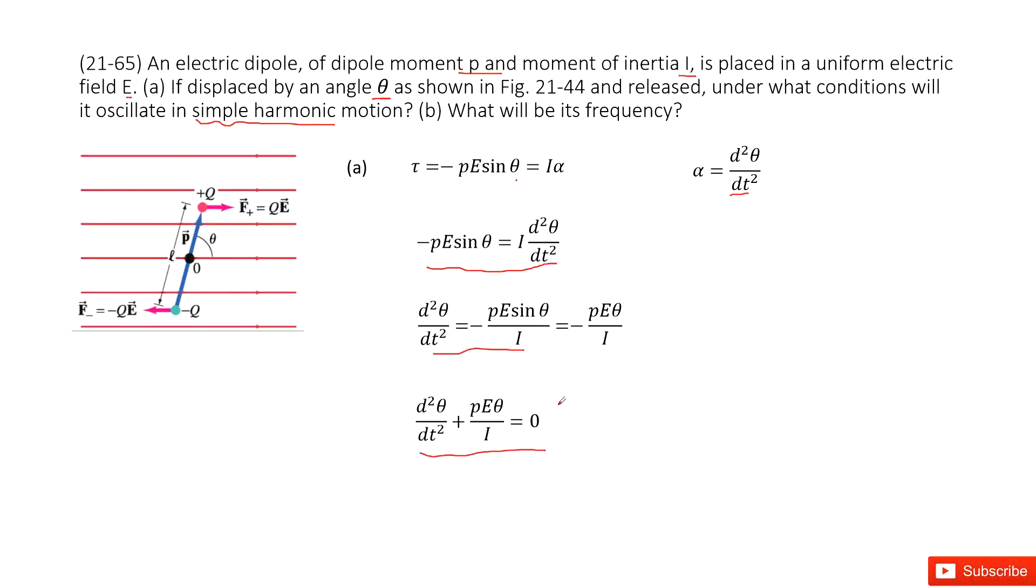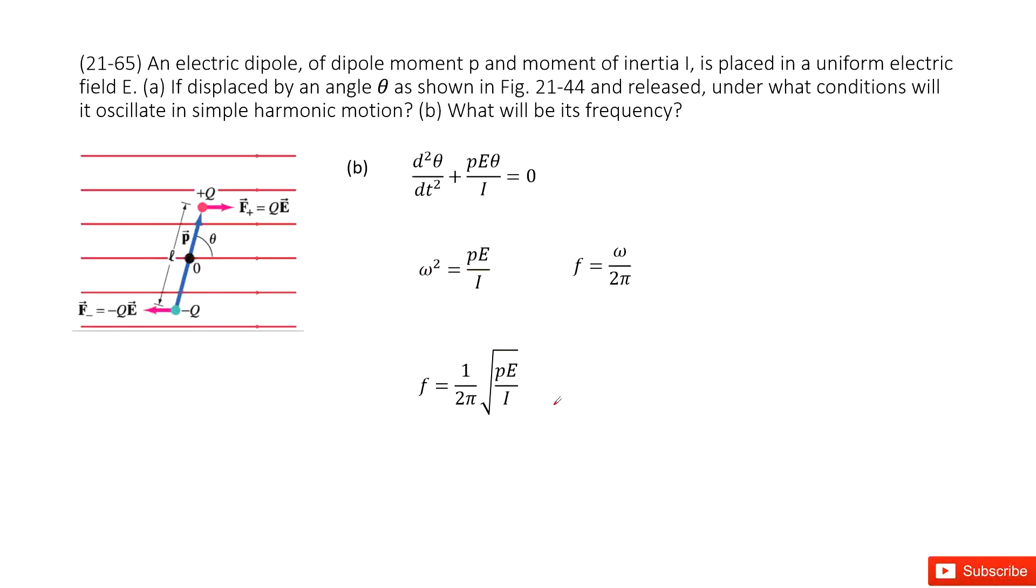Then this term equals ω². Omega is angular velocity, so ω² = PE/I. And we know the frequency f = ω/(2π). Therefore, we can input omega inside: f = (1/2π)√(PE/I). Thank you.